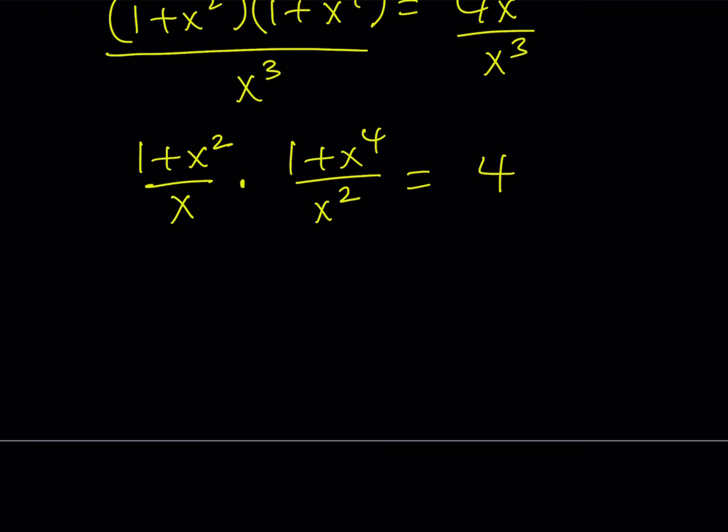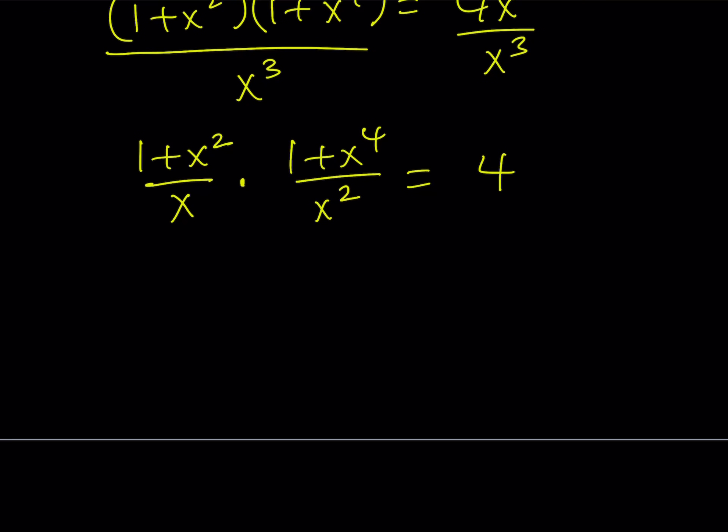And that gave us 4 on the right-hand side, but also gave us something nice on the left-hand side, because if you look at this expression and this expression, we can separate them, right? x squared divided by x is x plus 1 over x. Great. That's cool. And then this gives us x squared plus 1 over x squared. Okay. Great.